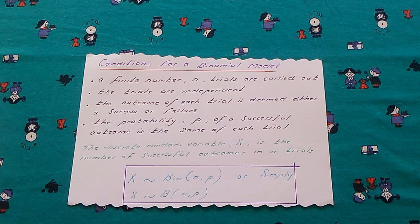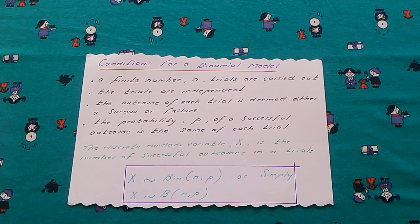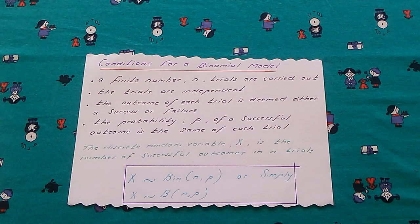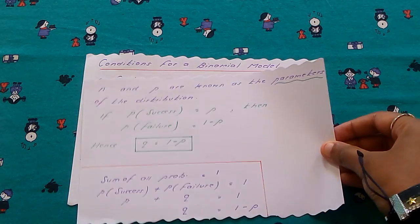If the above conditions are satisfied, X is said to follow a binomial distribution, written as X ~ Bin(n, p), or simply X ~ B(n, p). The number of trials n and the probability of success p are both needed to describe the distribution completely. They are known as the parameters of the binomial distribution.